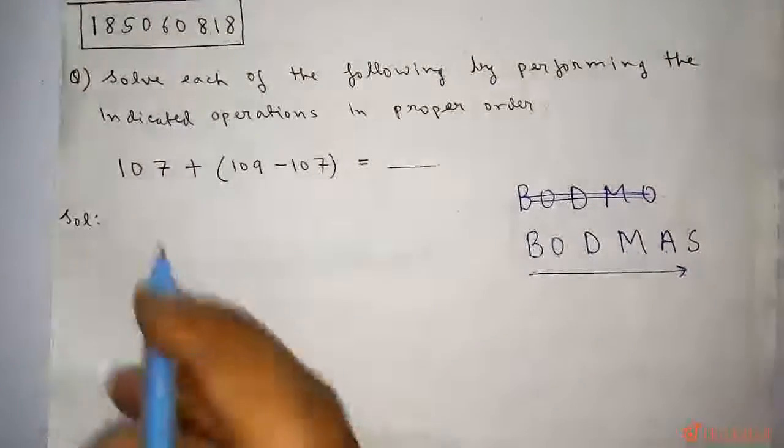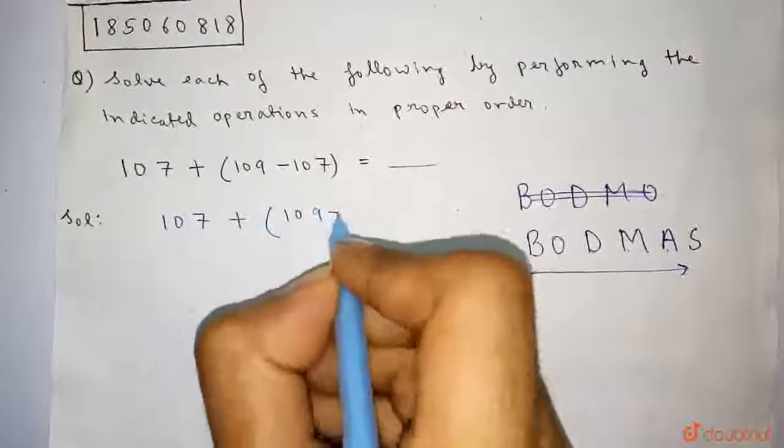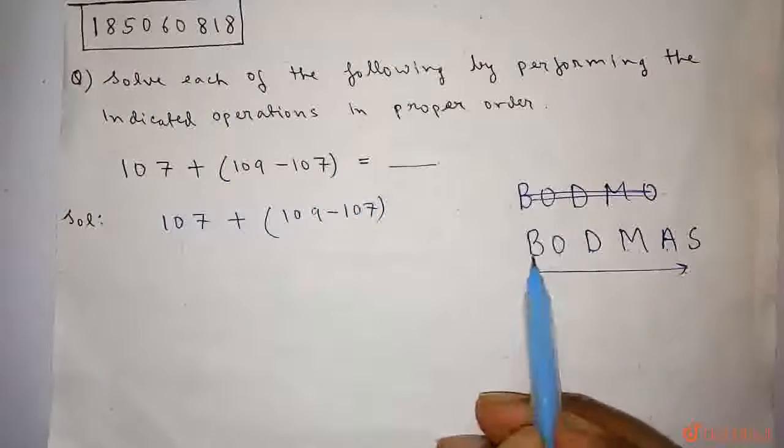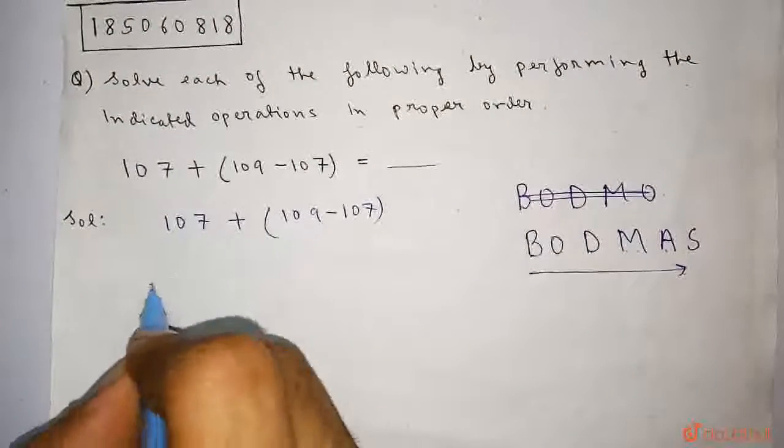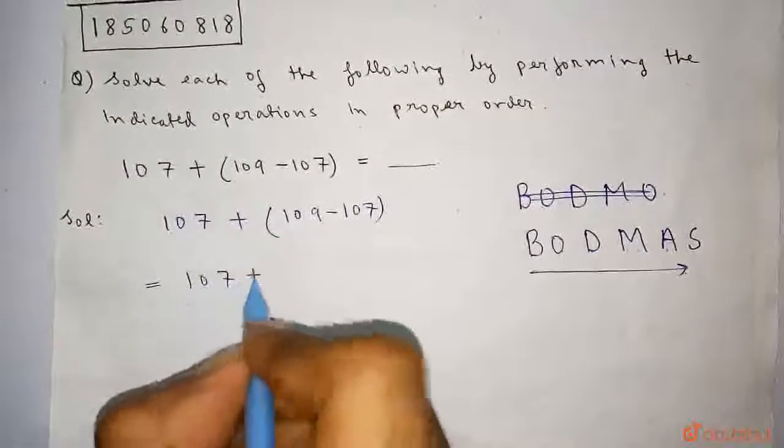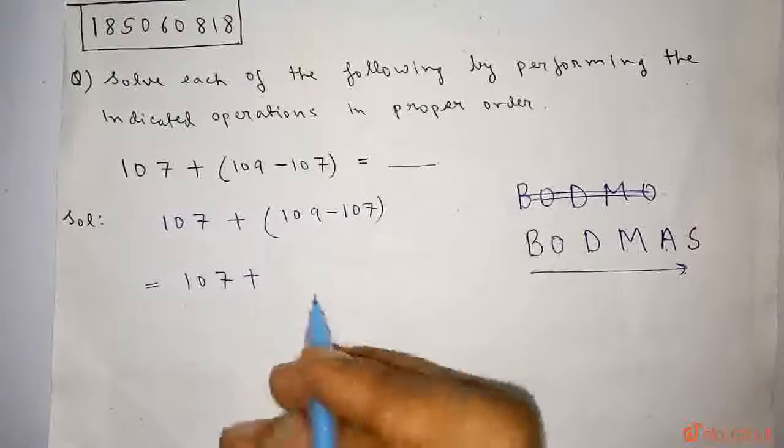Here in the question it is given 107 plus in bracket 109 minus 107. At first we will operate the bracket. So it comes out to be 107 plus in bracket it is 109 minus 107, which comes out to be 2. We are operating the bracket first.